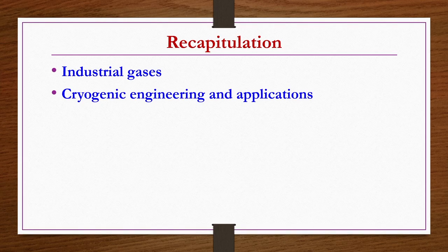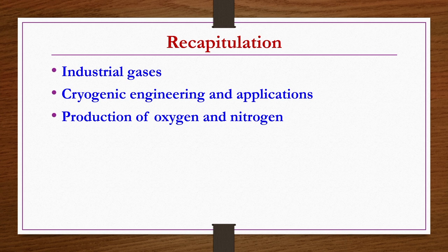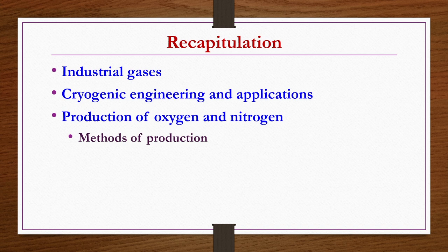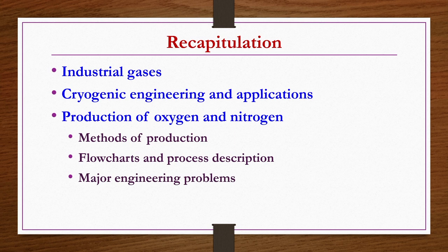In the previous lecture, we saw the basics of industrial gases — what they are, why we manufacture them industrially. We also covered the requirement of cryogenics in the production and storage of industrial gases, including some applications of cryogenics. We saw production of oxygen and nitrogen by different methods — one for low purity tonnage oxygen and another for high purity oxygen — along with flow charts, process descriptions, major engineering problems, and the economics of these industrial gases.